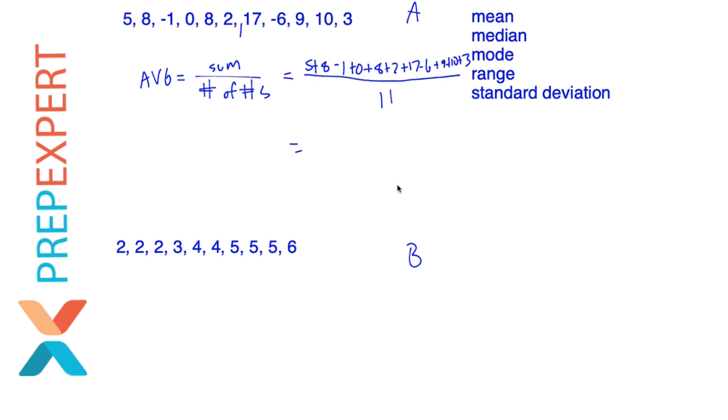So now that I've got the sum ready to find for the average, this is actually a great time to use your calculator. I'm a big believer in not using your calculator too much on the SAT or the ACT. But in this particular case, adding numbers is exactly what you should use it for. So five plus eight minus one plus zero plus eight plus two plus 17 minus six plus nine plus 10 plus three.